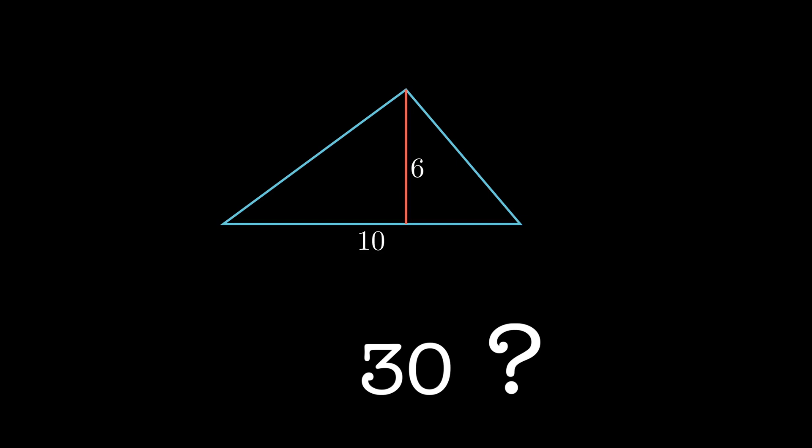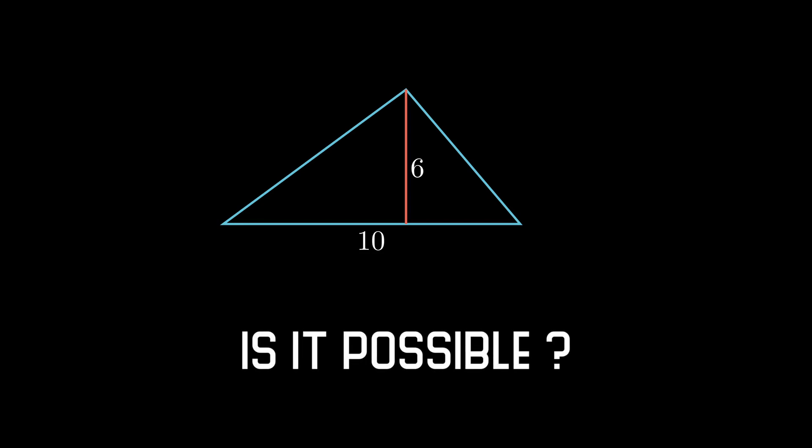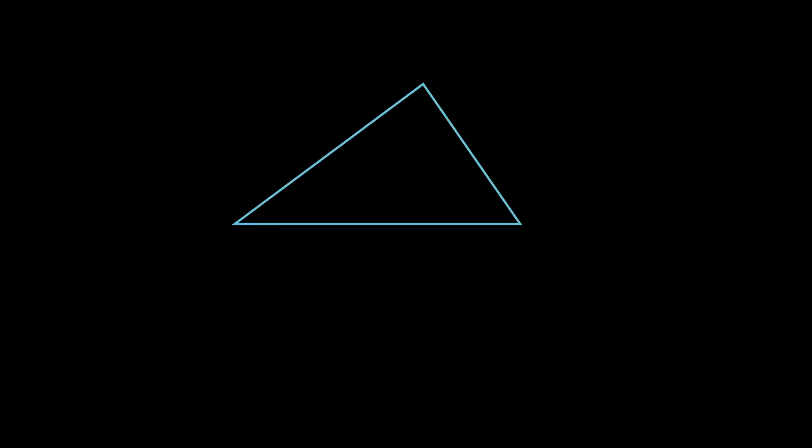But a true mathematician has no authorities to trust and he will question this drawing. Is this triangle even possible? As a simpler example, calculate the area of this triangle. The sum of the two shorter sides is exactly equal to the third one. So this drawing is incorrect and the area is zero.